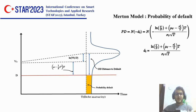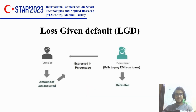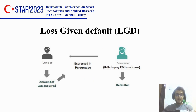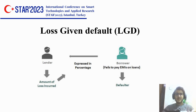Loss given default (LGD) is a measure used to quantify the expected percentage loss in the event of default by a borrower or counterparty. It represents the difference between the nominal value of the debt and the recoverable value after default, expressed as a percentage of the total debt.